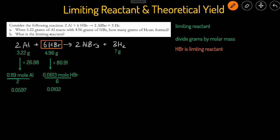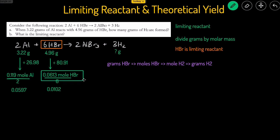HBr being the limiting reactant answers part B. Now to find grams of H2 produced, since HBr is the limiting reactant it determines the grams of hydrogen produced. We use stoichiometry following the flow chart: grams to moles to moles to grams. We go from grams of HBr to moles of HBr, to moles of H2, to grams of H2. We already have the moles of HBr, so we can start from there.